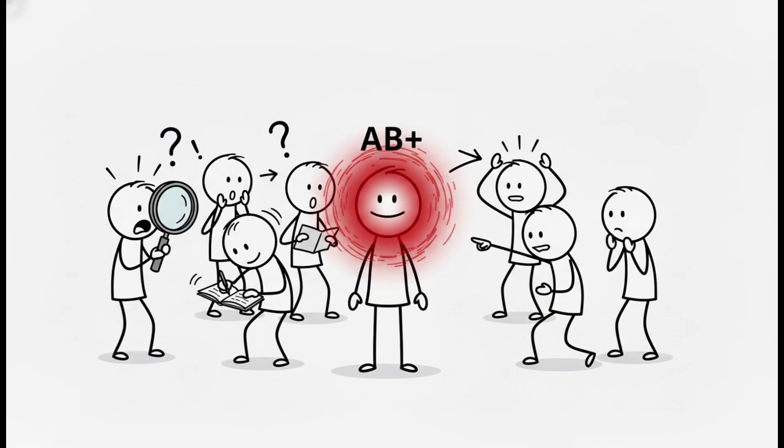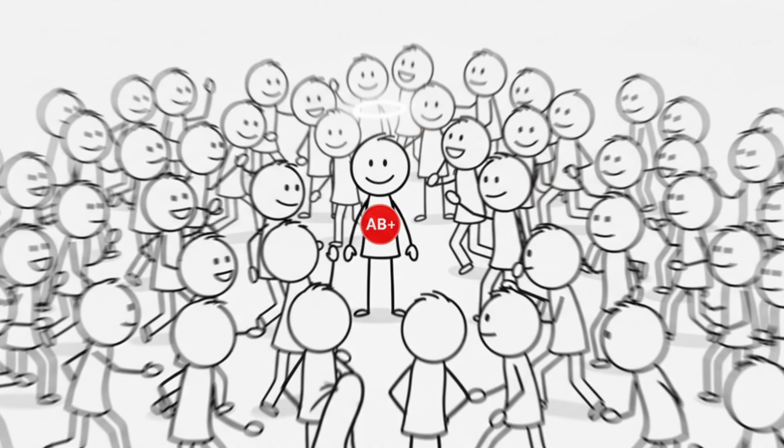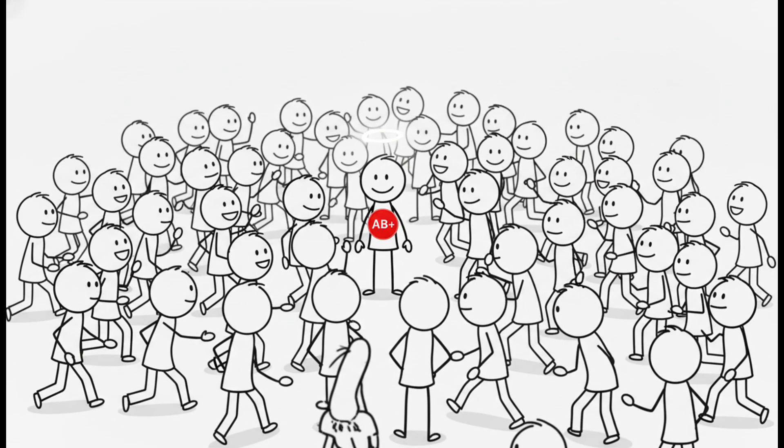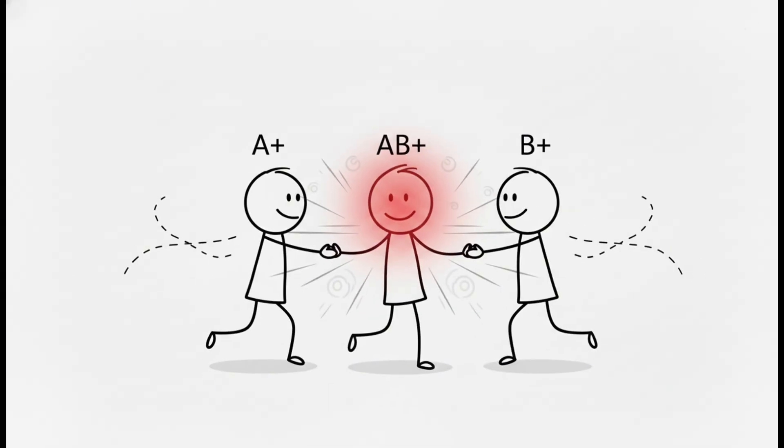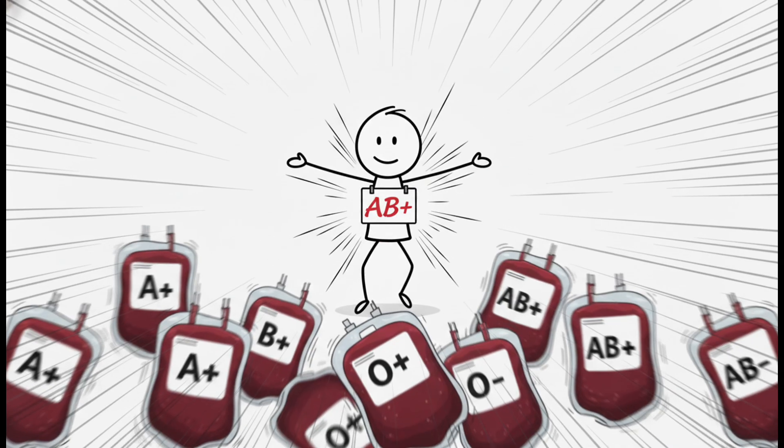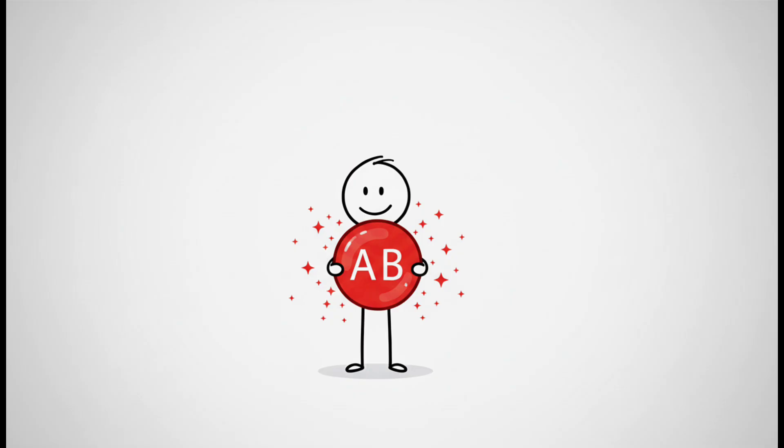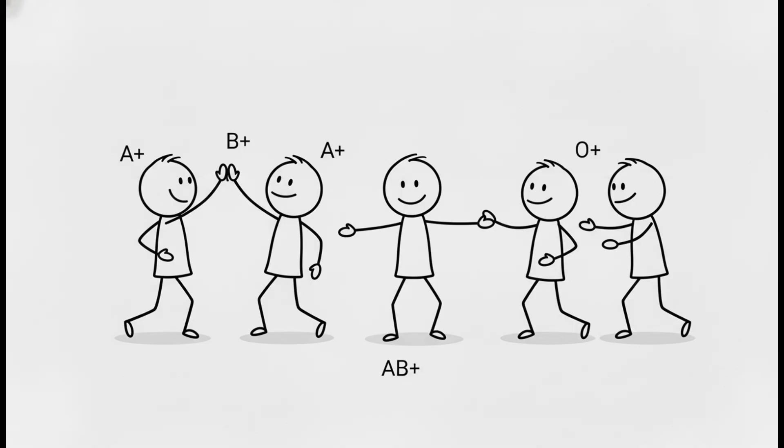AB positive. AB positive is a genetic anomaly. Found in less than 5% of the population, it's the newest blood type, emerging only a few thousand years ago when A and B populations mixed. Here's its superpower. AB positive is the universal recipient. Your red cells carry both A and B antigens, so your immune system sees all blood types as friendly.